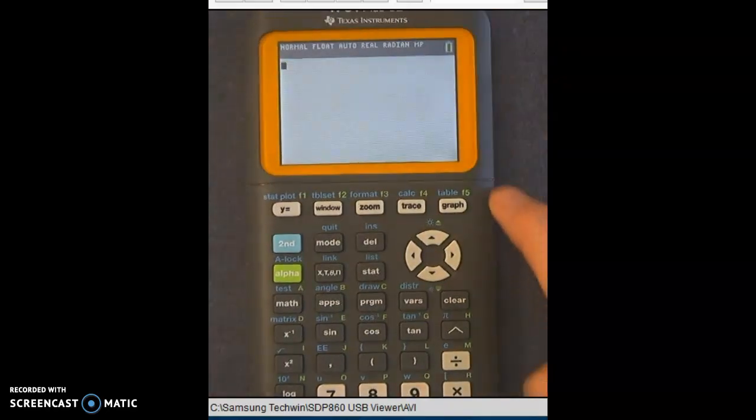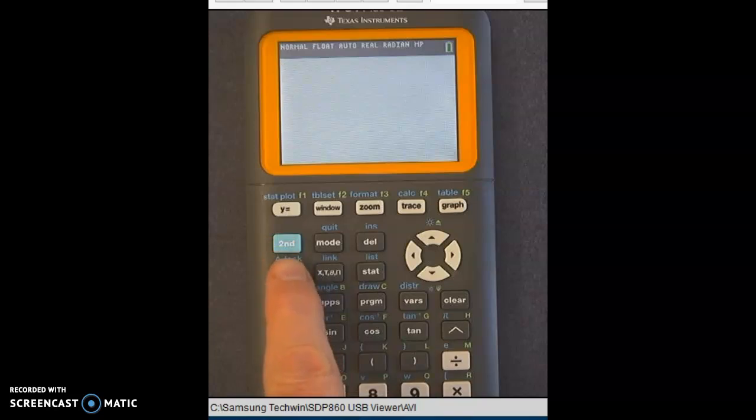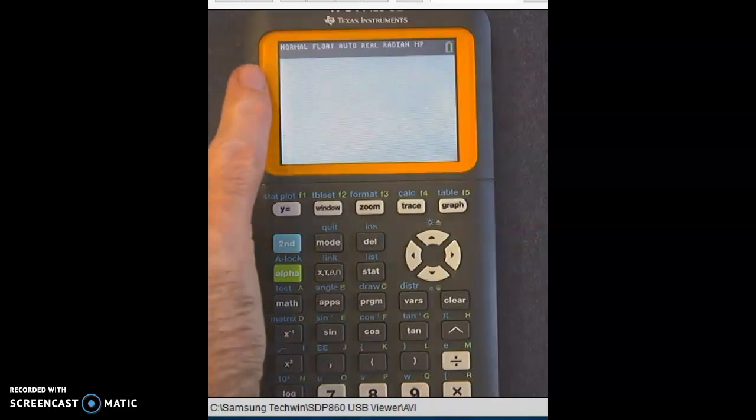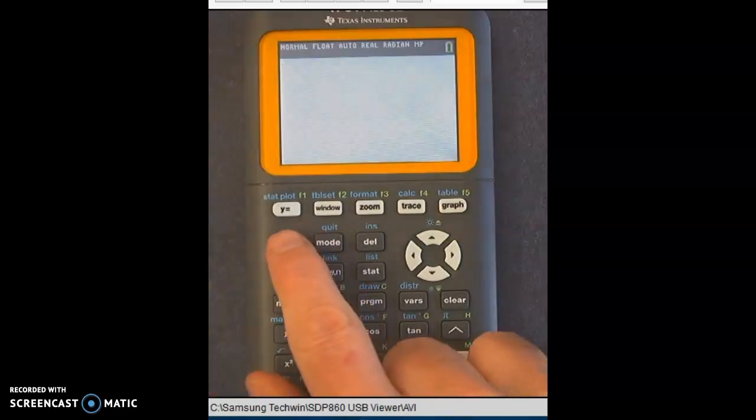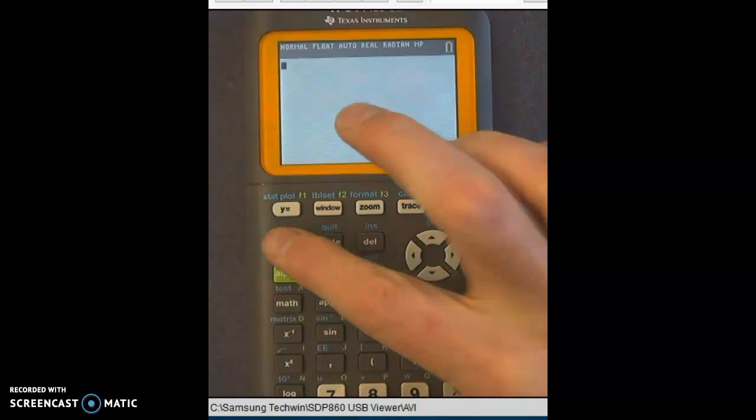Our table function itself is actually at the top right. It's right above the graph button, but it's in blue. So to access any of the blue buttons, remember you have to hit the second button first. And when you hit the second button, you'll know you pressed it because right now the cursor is solid dark. If I hit it, it has a little up arrow. So that means it's going to use anything above the buttons.